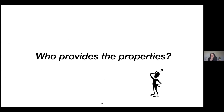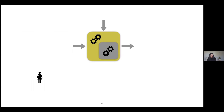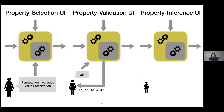You're probably thinking: where do the properties come from? Let me show three different user interfaces with varying degrees of user involvement to answer this question. I'll use the green engine to denote our new synthesizer, which is built on top of an existing inductive synthesis engine. I'll also set aside the program space and the initial examples the user provides, so we can focus on the additional information required in each case.